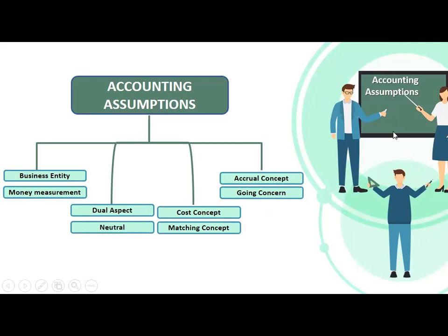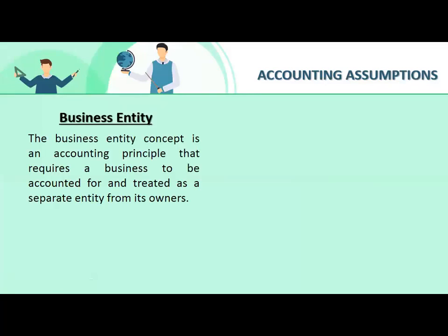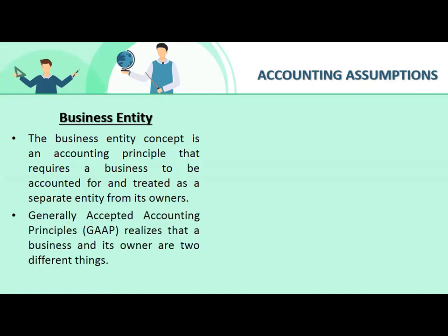First of all, business entity. In accounting, the assumption requires a business to be accounted for and treated as a separate entity from its owner. Business personal assets and owner personal liabilities, personal expenses, personal revenues — all go into a separate treatment. Business and owner accounts are not merged. Generally Accepted Accounting Principles recognize that a business and its owner are two different things.